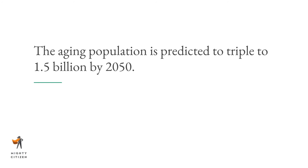The aging population is predicted to triple to 1.5 billion by the year 2050. As people age, they tend to have more disabilities, so you need to take accessibility into account not only for now but for the future. If your website is inaccessible, you're potentially excluding about 20% of the population from the conversation on your site right now, and that number is going to keep growing.